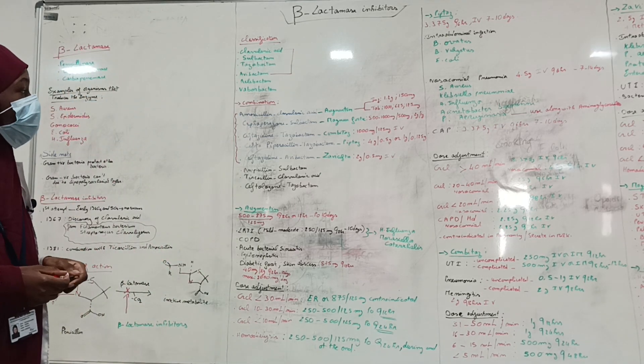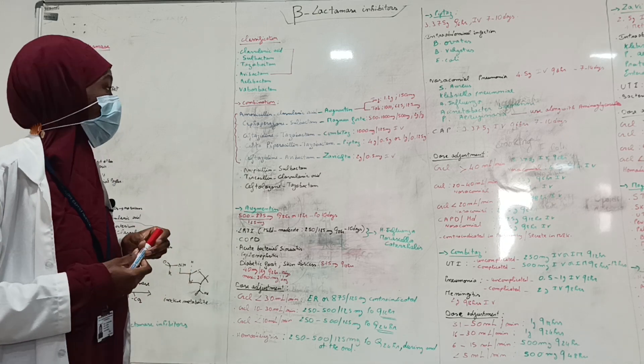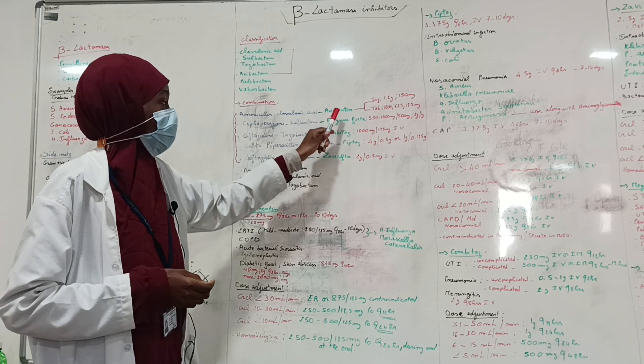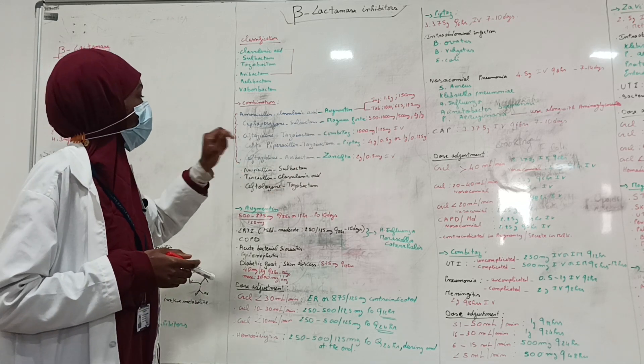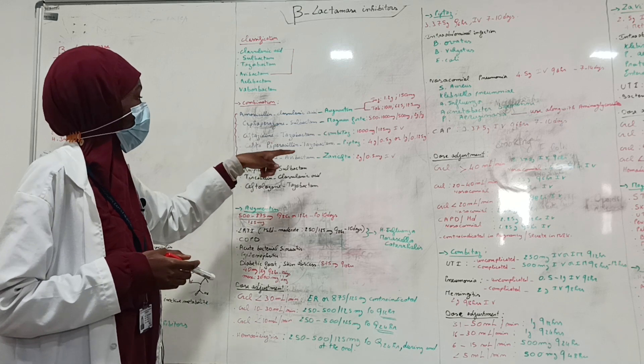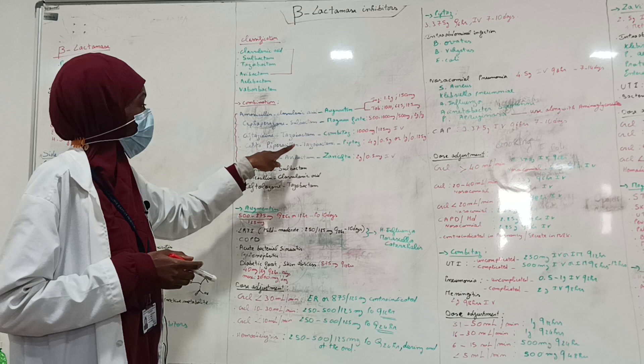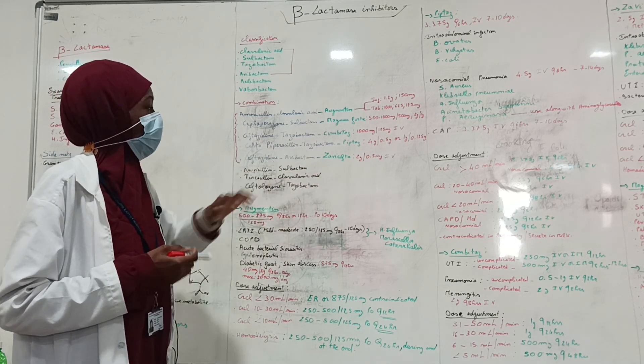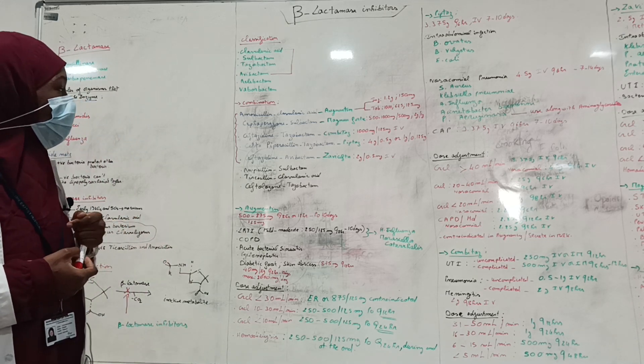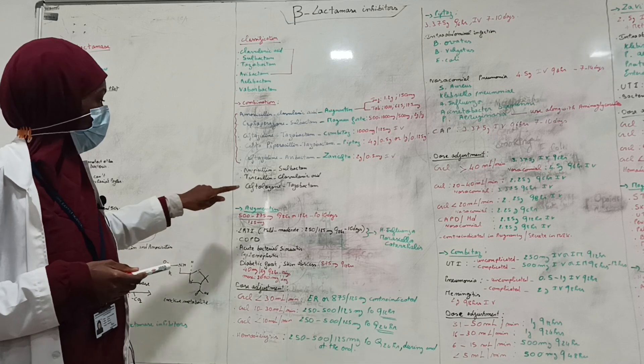As combinations, they are used along with amoxicillin. Here in this hospital, the brand name used is Augmentin. Cefoperazone along with sulbactam, Magnasfort. Ceftazidime along with tazobactam, Combitaz. Piperacillin and tazobactam, Piptaz. And ceftazidime and avibactam, Zavicefta.